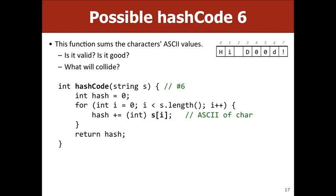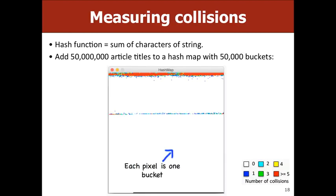Chris Piech did a simulation hashing Wikipedia article titles using the sum-of-characters function. The visualization shows red buckets as very long, white as empty. There's a lot of white and a lot of red — it's not well distributed. This confirms that summing characters still produces a poor distribution in practice.